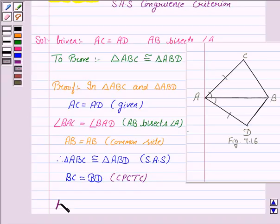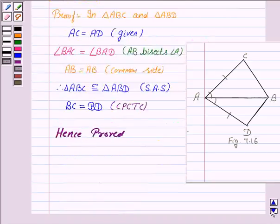The result is proved. That is, two triangles are congruent. And for the second part, answer is BC is equal to BD. That is, they are equal.